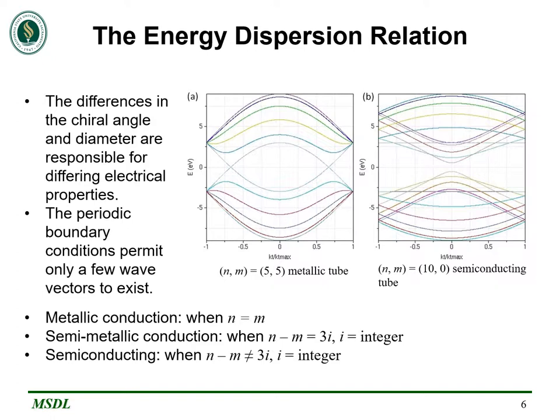For metallic conduction, N must be equal to M. Our other two cases are when N minus M is either an exact integer multiple of three, or not, making the carbon nanotube semi-metallic or semiconducting respectively.